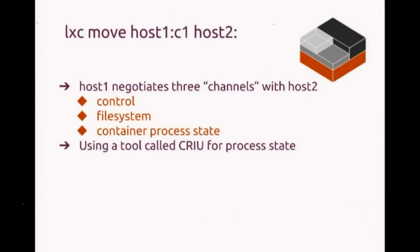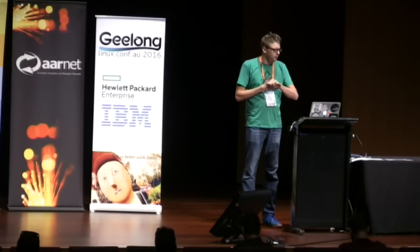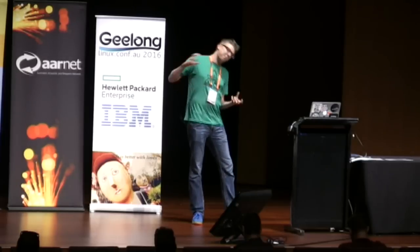When you migrate something with our command line client, you just do an LXC move and move the container from one host to another. What happens is LXD negotiates three different channels: a control channel — basically whether this failed or worked — a file system channel, where LXD supports various file system backends and can do smart things depending on what backends the two hosts have, and the container process state channel for transferring mount namespaces and all the little kernel details needed.